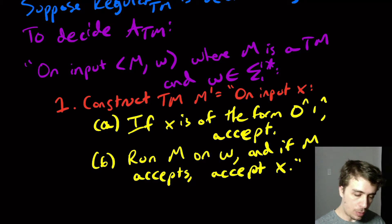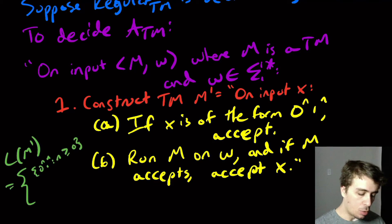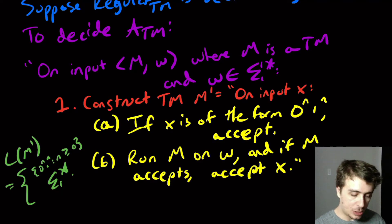And so what we can get from this is that the language of M prime is going to be one of two things: the 0^n 1^n language, or sigma star. And why is it sigma star?